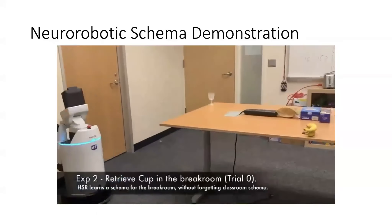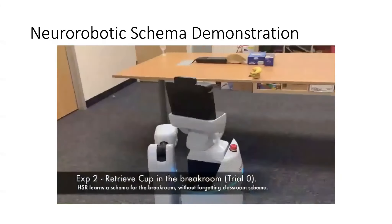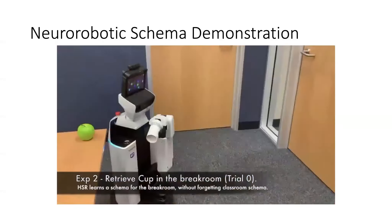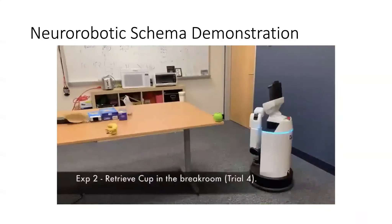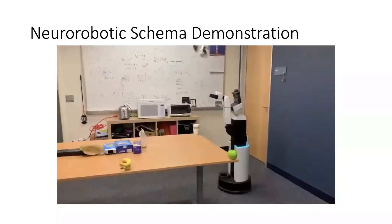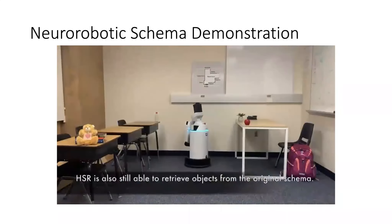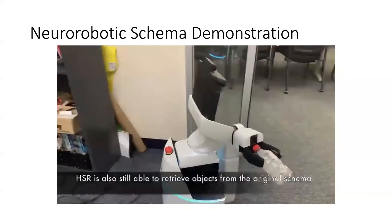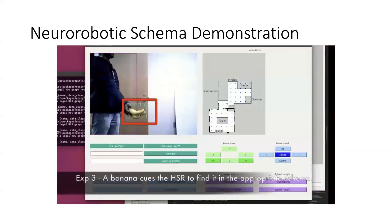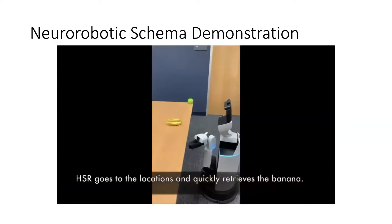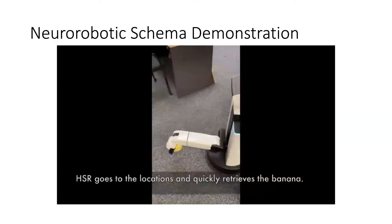Then we put it in the break room — this is the second schema — and tell it to retrieve a cup. First time, it starts to build up what goes in the break room schema. It takes a while to find the cup, but it finds it. By trial four, it knows right where the cup is and rapidly retrieves it. Going back to the original schema, it's able to remember where objects were — it hasn't lost its memory of the classroom. The third experiment: you can cue it with an object it's never been asked to retrieve, but it knows a banana should be found on the break room table, so it immediately sends its search there and grabs the banana.